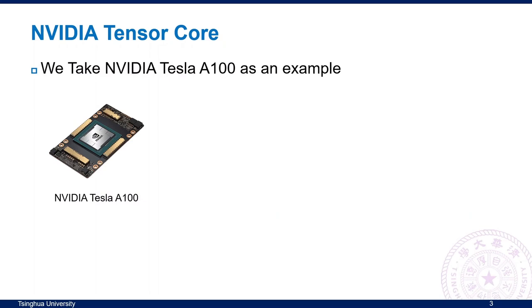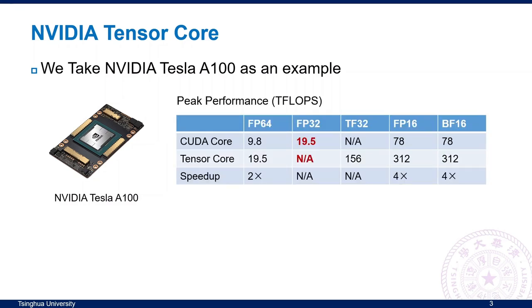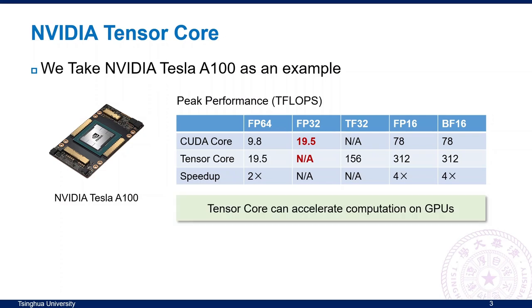We take NVIDIA Tesla A100 as an example. A100 provides a general-purpose computing unit, CUDA Core, and a domain-specific computing unit, Tensor Core. Both of them support different types of combinations. The table on the right shows their peak performance. We can see that Tensor Core can obviously provide higher performance than CUDA Core, but the supported types are limited.